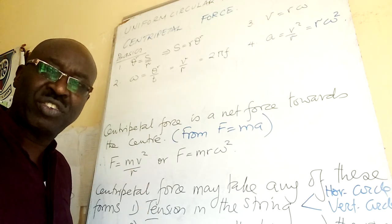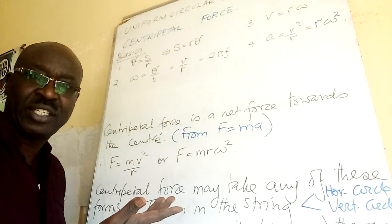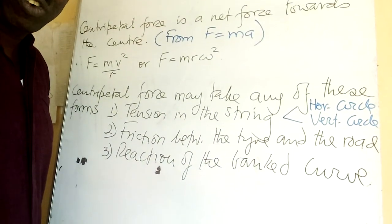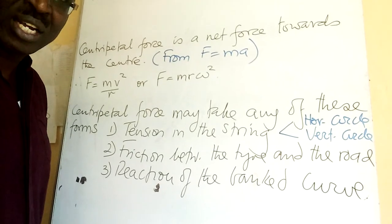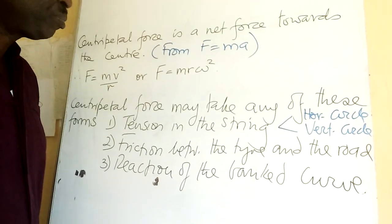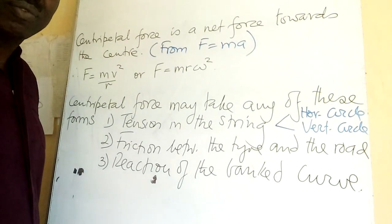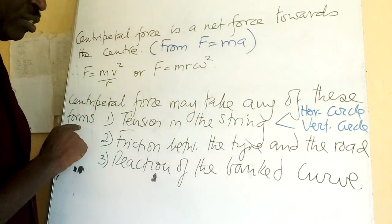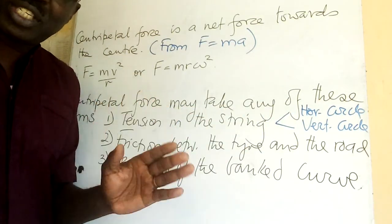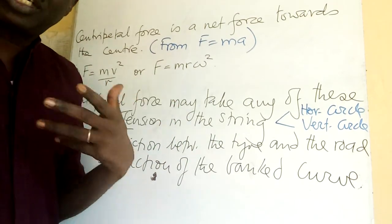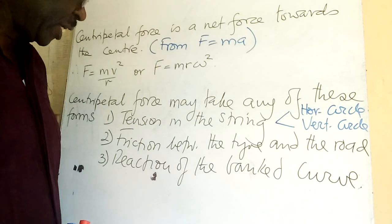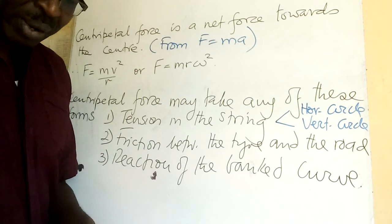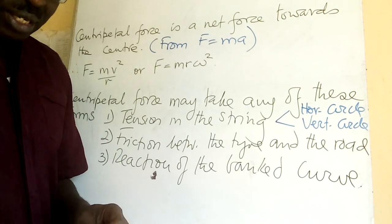If you have your basics right it is very easy to get this, because we are going to apply it rather than re-derive it. Centripetal force may take any of these forms. For example, when you are whirling a body around in a circle — you have a string and you are rotating a body in a vertical circle.